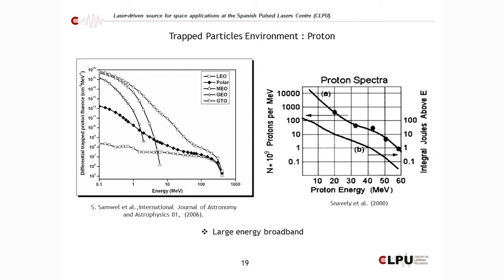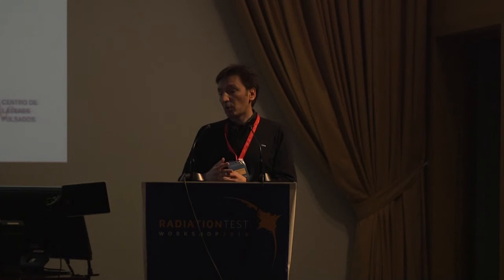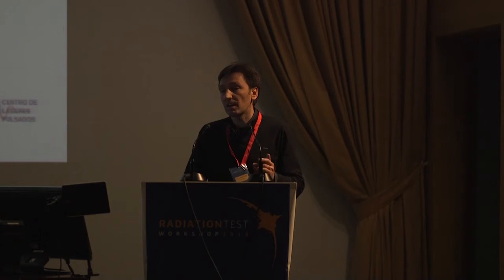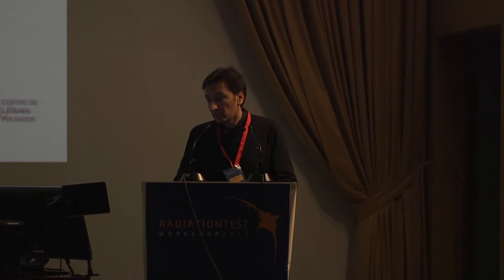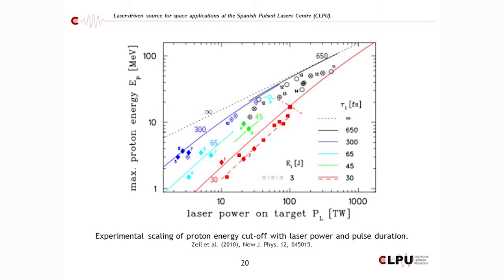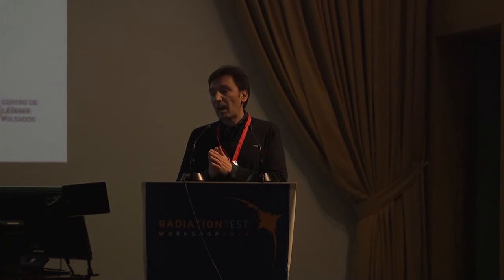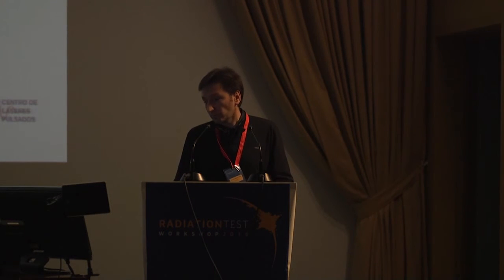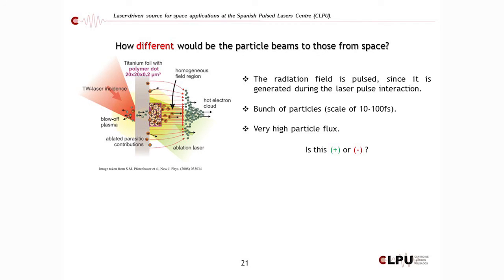These are measurements of the proton spectra we get with a laser. Up to now, the state of the art for proton energy that can be reached is 100 MeV — the current maximum. This is still highly relevant for this community. Of course there is a scaling for the maximum proton energy with laser power, and it also depends strongly on the pulse duration of the laser, as the different curves with different pulse timings show.